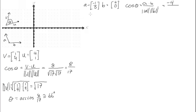The length of a is the square root of negative 1 times 1 plus 3 times 3, which is the square root of 10. Times the square root of b dot b, which is the square root of 4 times 4 plus 0, giving us the square root of 16.